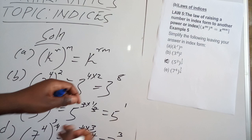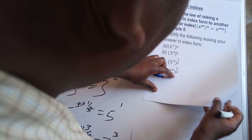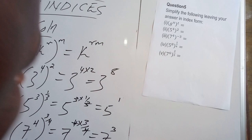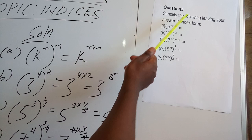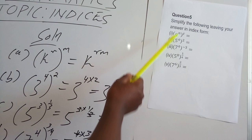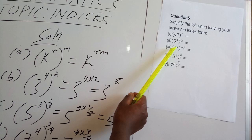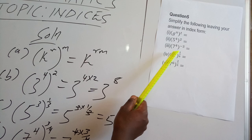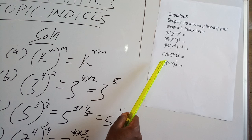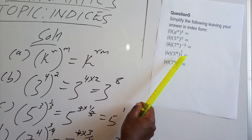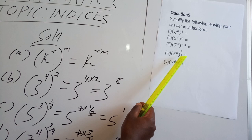So we come to the end of the coverage of the fifth law of indices. We have 5 more to go. Before I end our lesson, note this assignment in regard to law number 5 — simplify the following, leaving your answer in index form: Roman 1: G power N raised to power T. Roman 2: 5 power 4 raised to power 2. Roman 3: 7 power 4 raised to power negative 3. Roman 4: 5 power 8 raised to power one quarter. Roman 5: 7 power 6 raised to power 2 over 3. Let's have the results in the next lesson as we proceed with the coverage of the nine laws toward the sixth law. We'll see you next time.